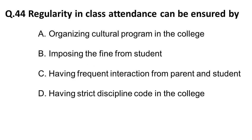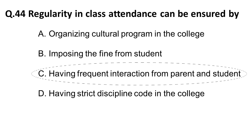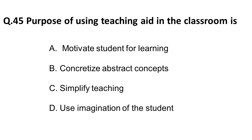Question 44: Regularity in class attendance can be ensured by — A) organizing cultural programs in college, B) imposing fines on students, C) having frequent interaction with parents and students, D) having strict discipline code in college. The correct answer is C: having frequent interaction with parents and students.